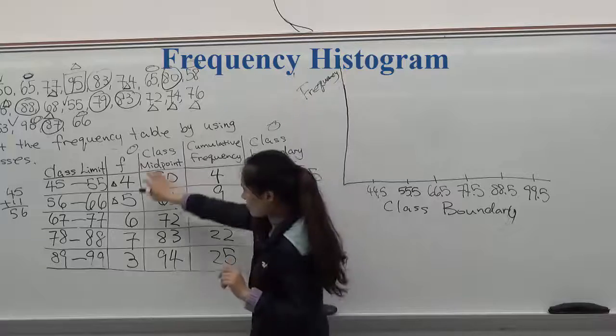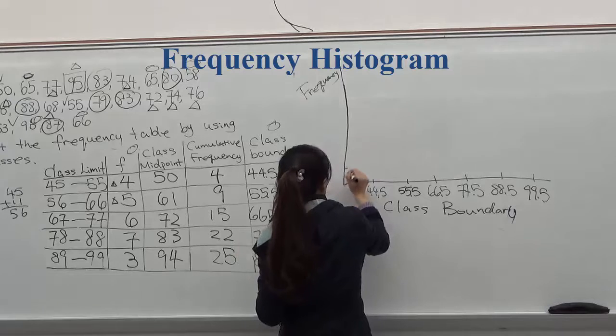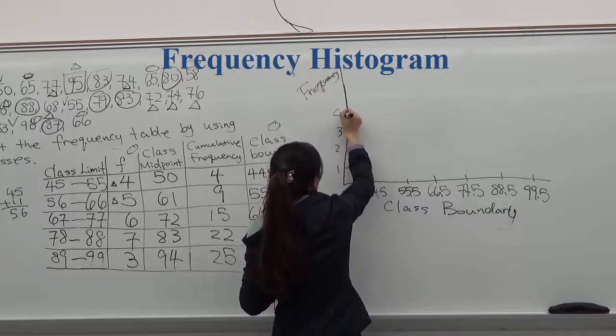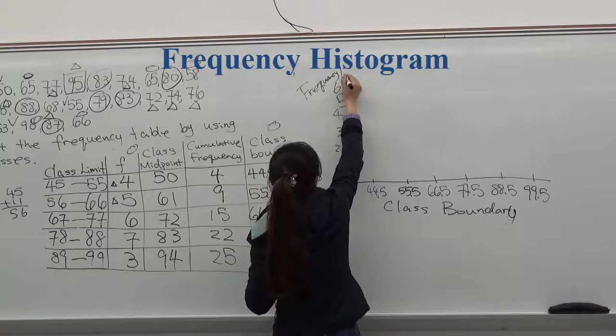And the frequency goes to the Y. The highest frequency you have is 7. So I'm going to label them by 1. 1, 2, 3, 4, 5, 6, 7.